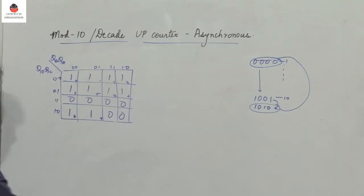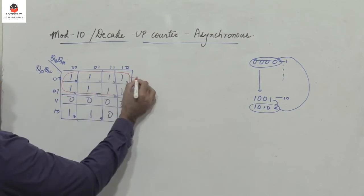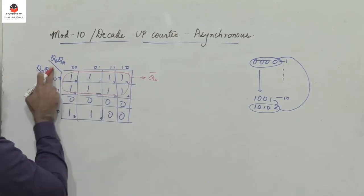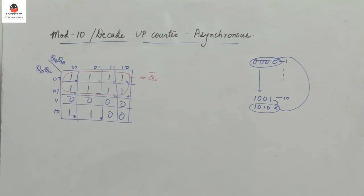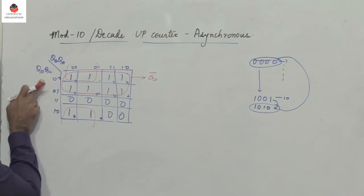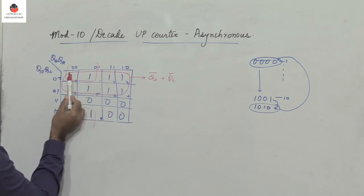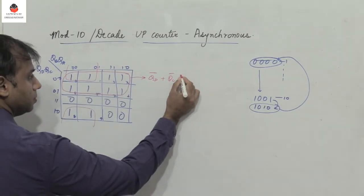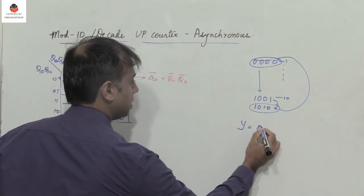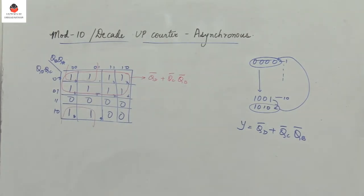It's very easy to simplify: combine all eight ones. When combining them, QC gets eliminated because QC appears in complementary form, so we have QD̄. Both QA and QB appear in complementary form so they get eliminated. The remaining two ones can be combined, giving QC̄·QB̄. Therefore the output Y equals QD̄ plus QC̄·QB̄, where QA, QB, QC, QD are the outputs of the four JK flip-flops.